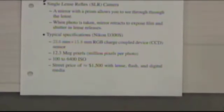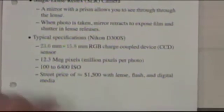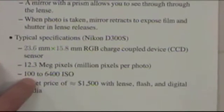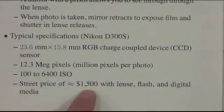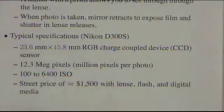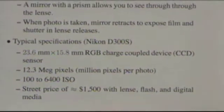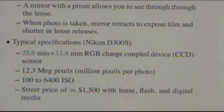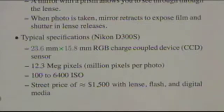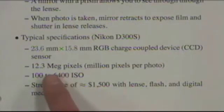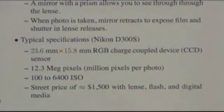A typical camera these days — I just looked at some cameras — a 12-megapixel camera that goes from 100 to 6,400 ISO. The actual camera body is about $1,500, and then of course you have to buy a lens, flash, and digital media to go with that. It used to be that the main marketing point for these cameras was the number of megapixels, but in fact some of the more expensive cameras have fewer megapixels because they trade off megapixels for other things that are maybe desirable, like speed of the camera.